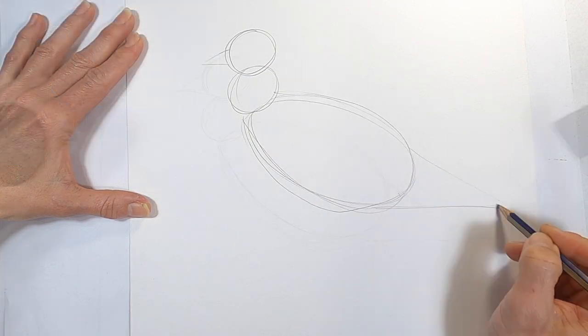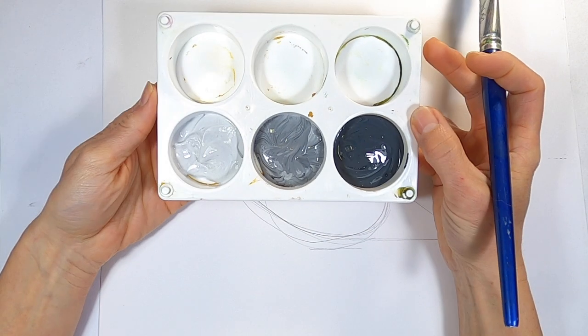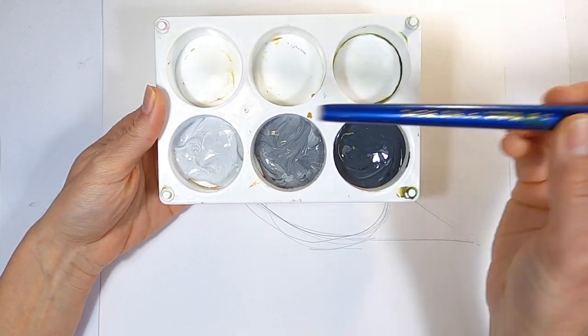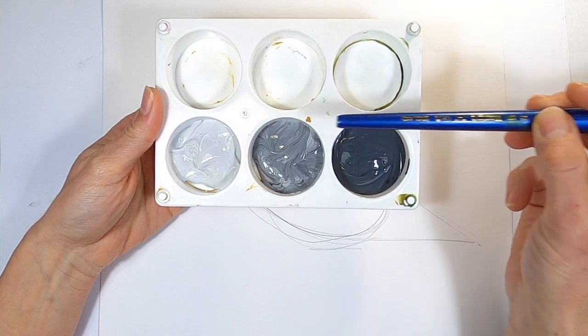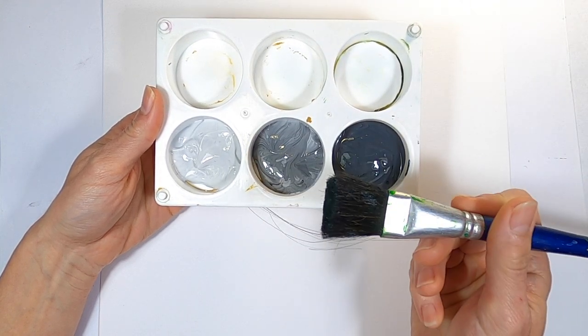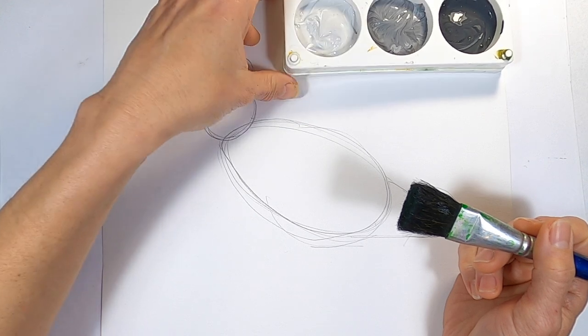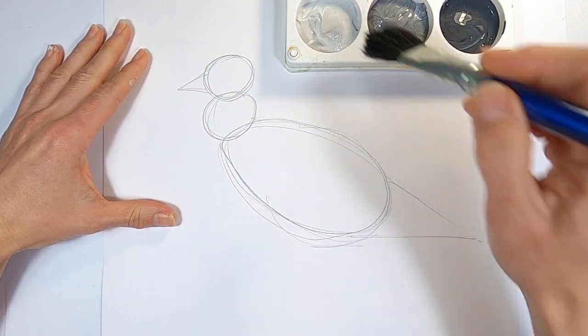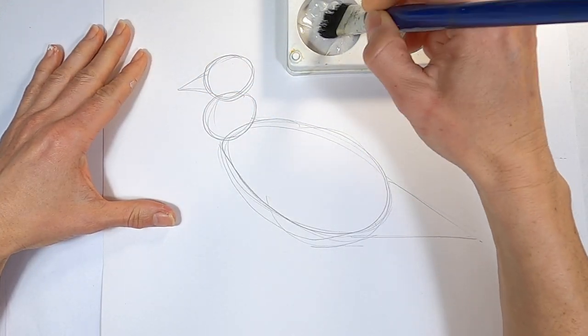Now that I have my basic bird shape drawn, I'm going to stop drawing and add some acrylic paint. Because this is a grey and white seagull, I've mixed some white and black to make a light grey, a medium grey and a dark grey. Taking a wide brush, you're going to paint three lines of grey over the body of the bird.